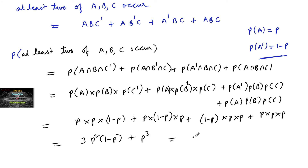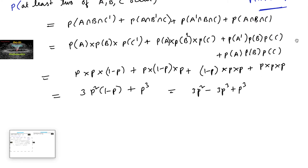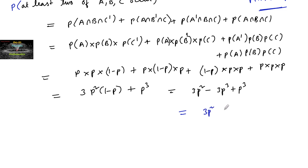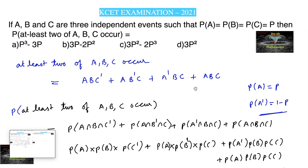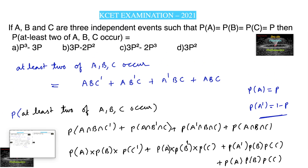Simplifying, we get 3P² − 3P³ + P³ = 3P² − 2P³. So the probability of at least 2 of A, B, C occurring is 3P² − 2P³, which corresponds to the correct option.